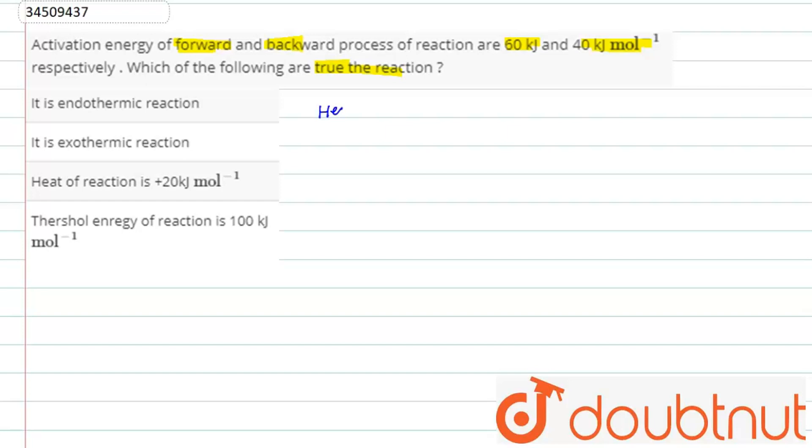As we know, heat of enthalpy, that is delta H, is equal to activation energy of forward reaction minus activation energy of backward reaction.